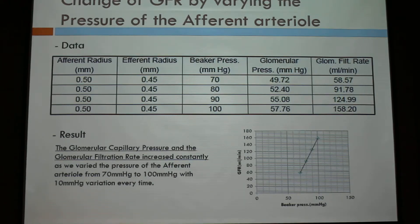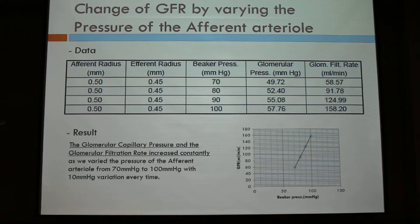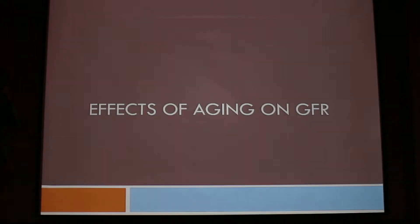We measured the glomerular pressure and the glomerular filtration rate. We got this result: the glomerular capillary pressure and the glomerular filtration rate increase constantly, as shown on the graph. There is a positive correlation between the GFR and the beaker pressure. As we varied the pressure of the afferent arteriole from 70 mmHg to 100 mmHg with 10 mmHg variation each time, the conclusion was that there is a positive correlation between the GFR and the arterial pressure.